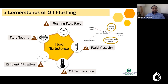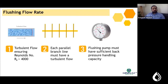The second cornerstone is fluid viscosity. Referring to the Reynolds number formula, dynamic viscosity is inversely proportional to Reynolds number. Therefore, the lower the fluid viscosity, the better the Reynolds number and the more efficient the flushing. The remaining three cornerstones are oil temperature, efficient filtration, and fluid testing.